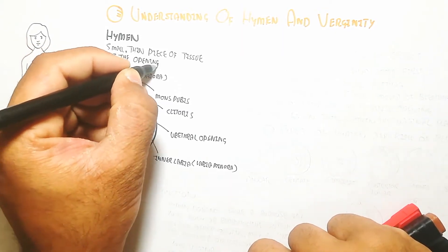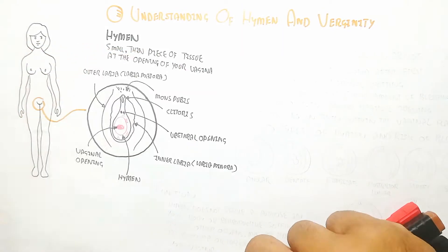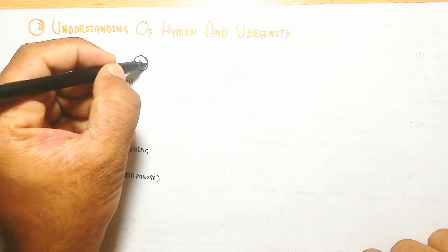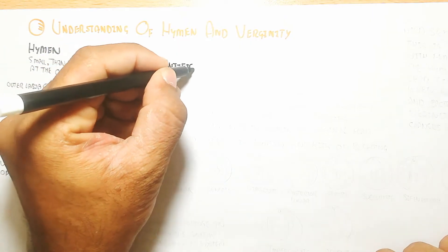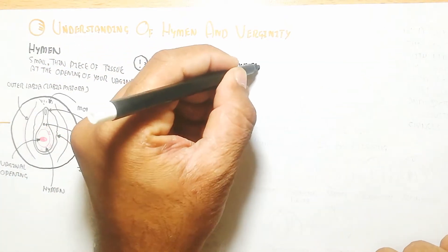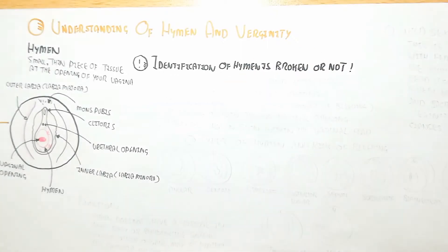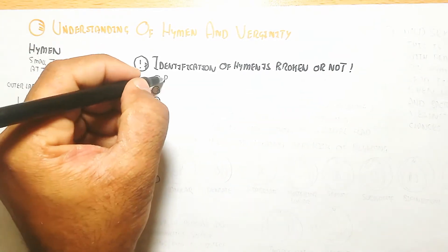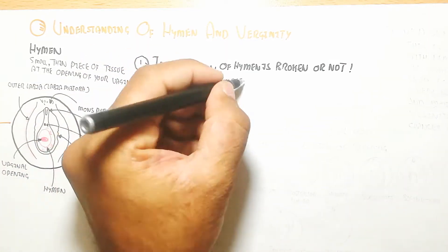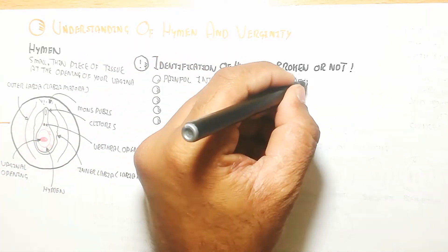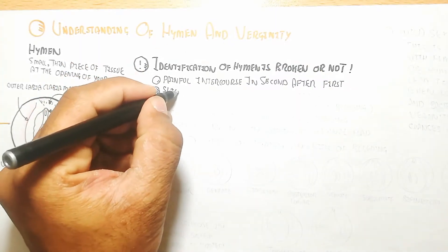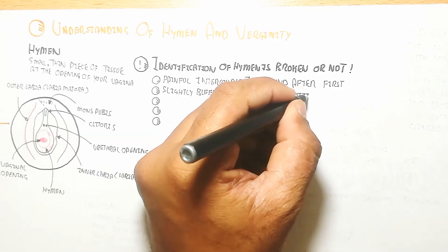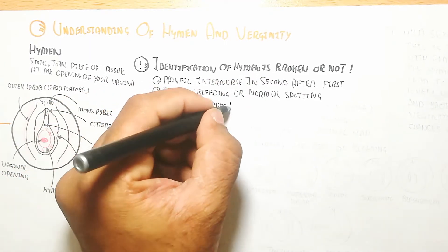This is the hymen. Hymen is a small thin piece of tissue at the opening of your vagina. It narrows the vagina during penetration, so the first time it will be compressed or ruptured. Identification of whether the hymen is broken or not depends on painful intercourse.